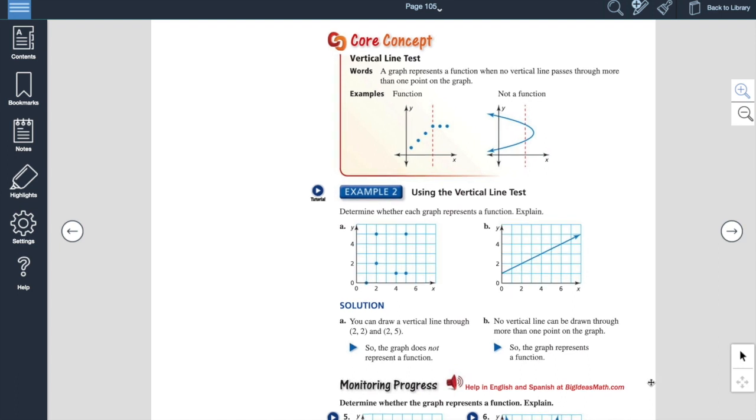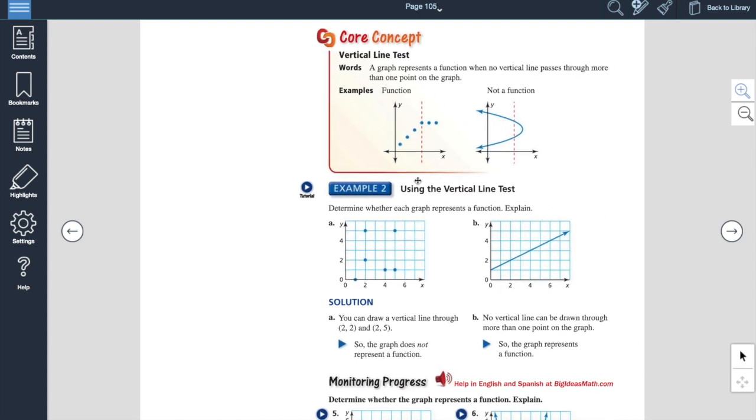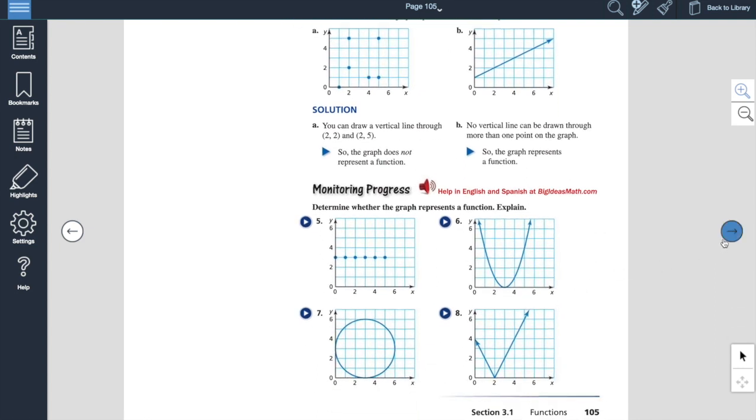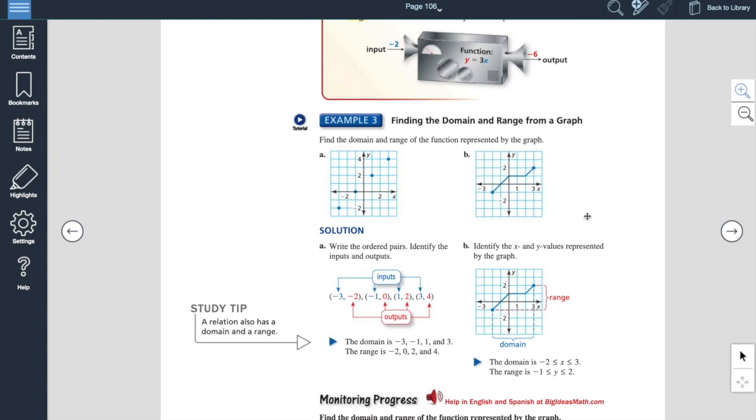Another way to determine if you have a function or not is what's called the vertical line test. So if you were given a graph, all you have to do is draw a vertical line. And the catch with this is if it ever hits it in more than one point, it's not a function. If it never hits it in more than one point, it is a function. So this first example right here is a function. Every vertical line that you could draw only hits that in one spot. That is a function. This is not a function because this dotted line right here hits it in two spots. Not a function. Again, they walk you through some examples there. Some pretty good ones. So please check those out.